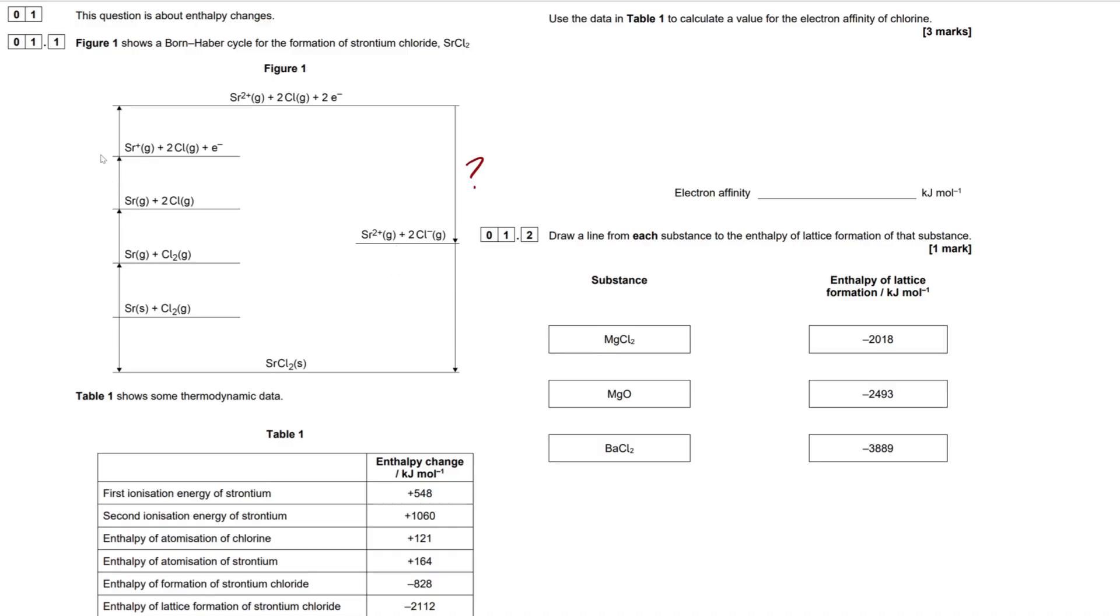Within these Born-Haber Cycles, what you can do is you can equate both sides, so you can add up all of this, add up all of this, and then make this X or whatever algebraic value you want, rearrange it, solve it, and that will give us our value. When you do it in this way, completely fine to do. However, it doesn't give you a value whether it's positive or negative. So, what you have to do is you have to look at the Born-Haber Cycle and think to yourself, is this a positive arrow or is it a negative arrow? And that will determine whether it's endo or exothermic.